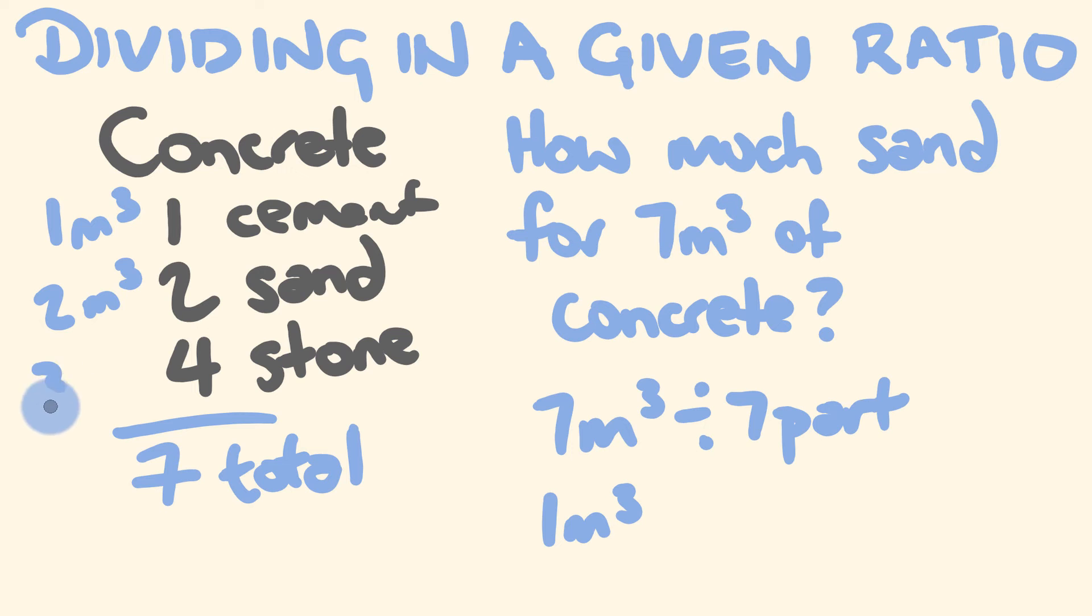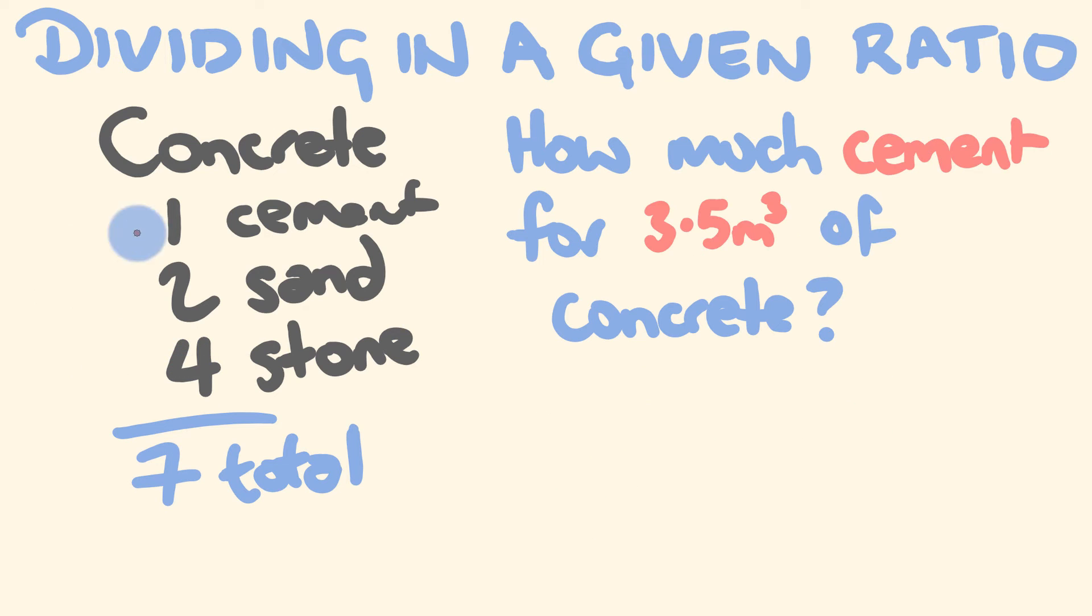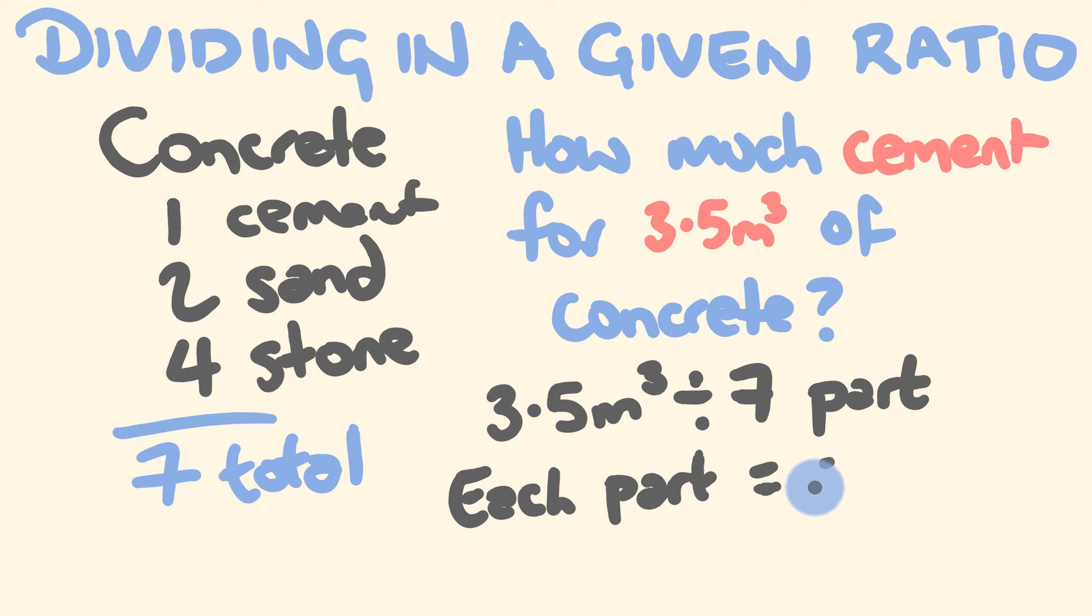Another thing we could ask is how much cement do we need to make 3.5 cubic metres of concrete? We're going to be using that same ratio here. So if we get this 3.5 metres cubed, and we are going to divide it into our 7 parts, we're going to see that each part, 3.5 divided by 7 equals 0.5 metres cubed.